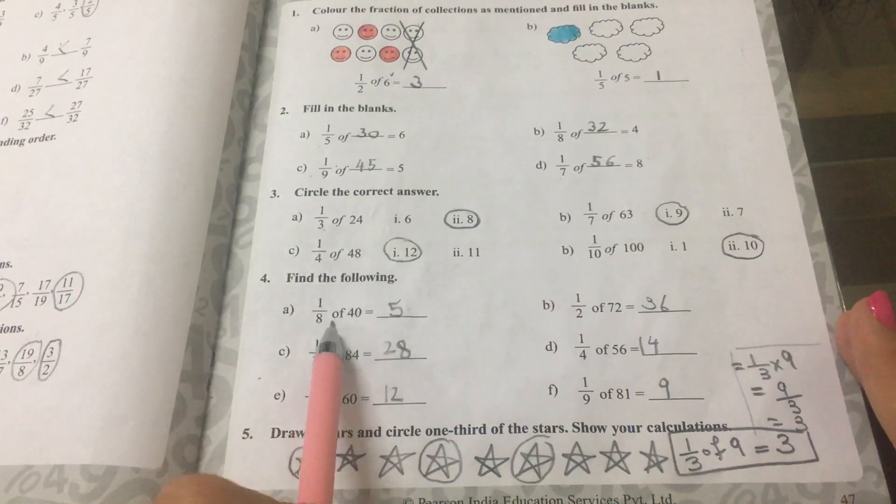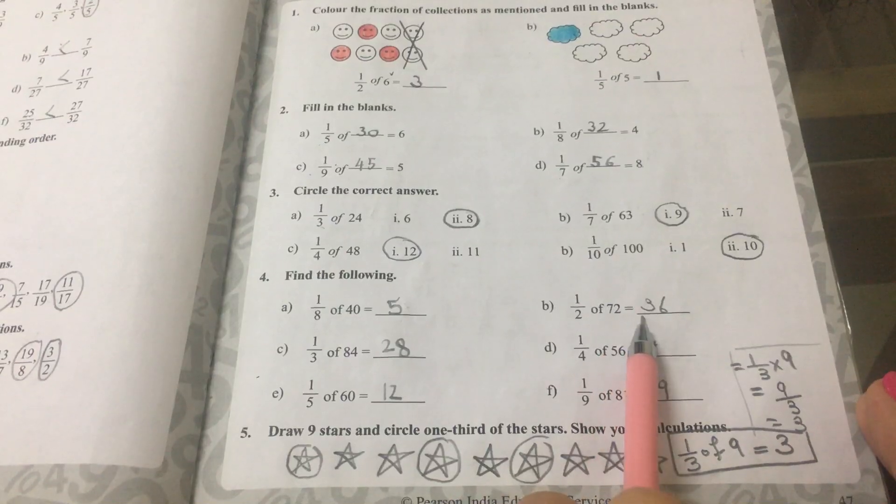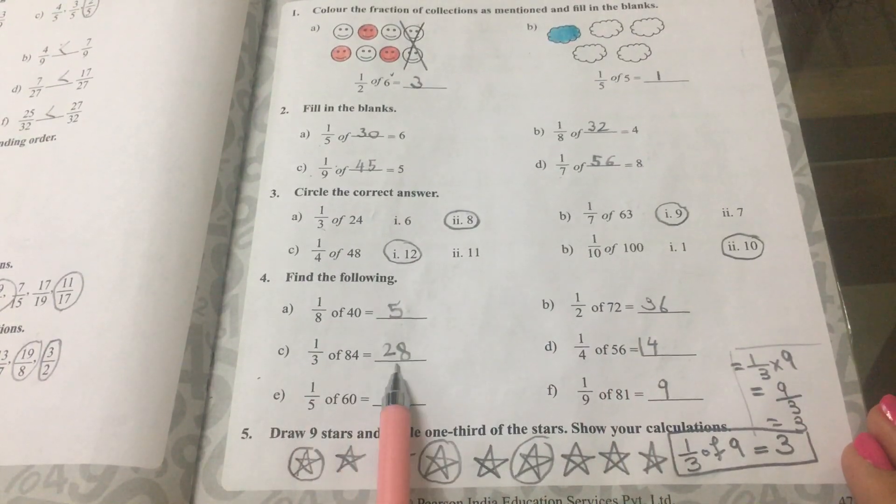Find the following. A, 1 eighth of 40 equals to 5. B, 1 half of 72 equals to 36. C, 1 third of 48 equals to 28.